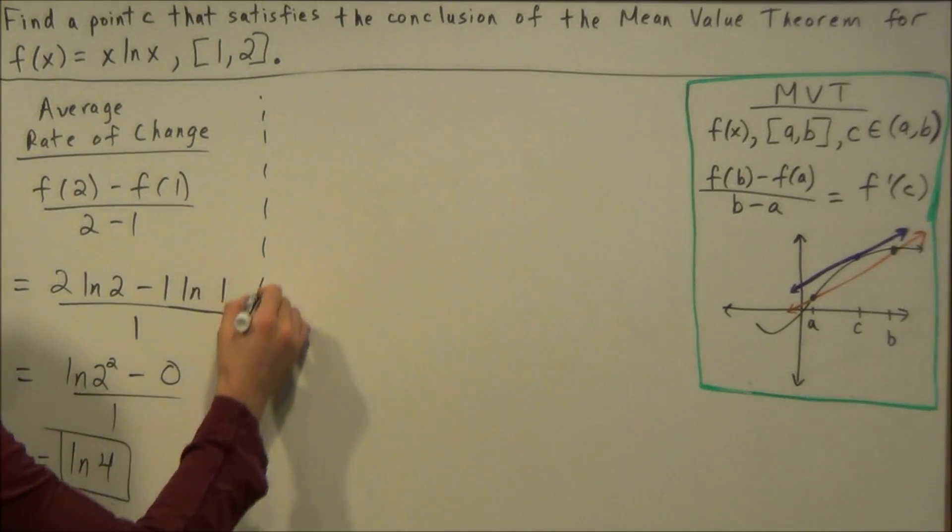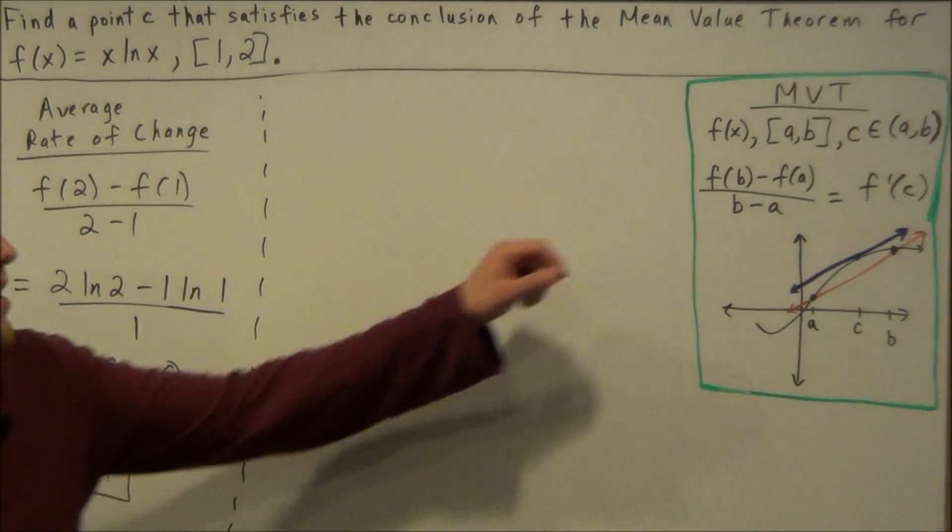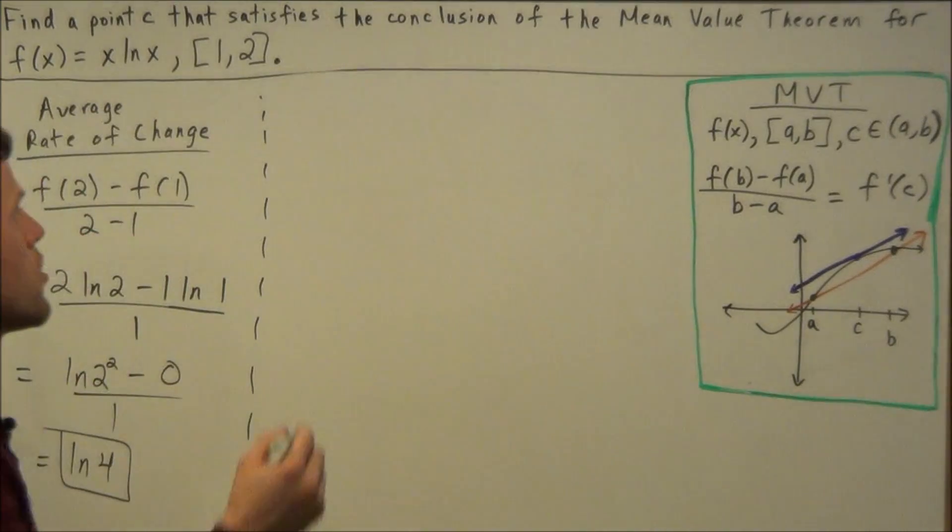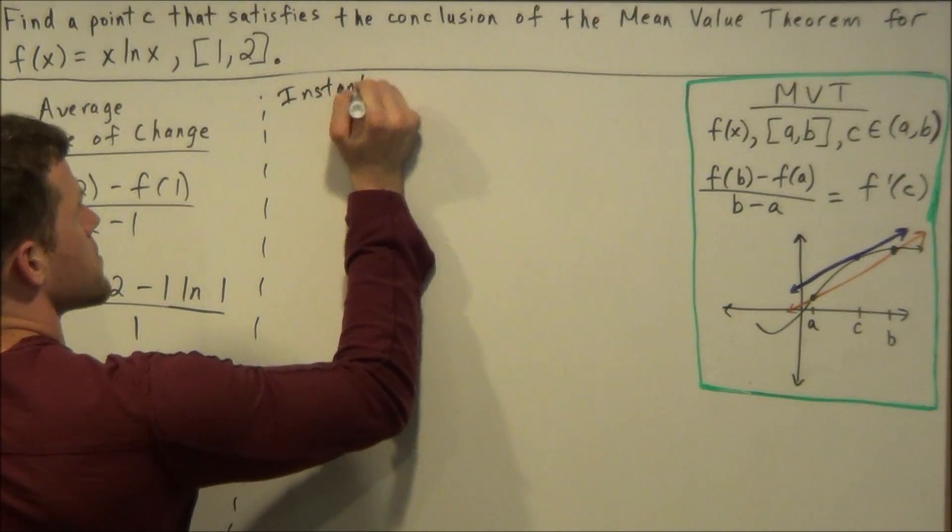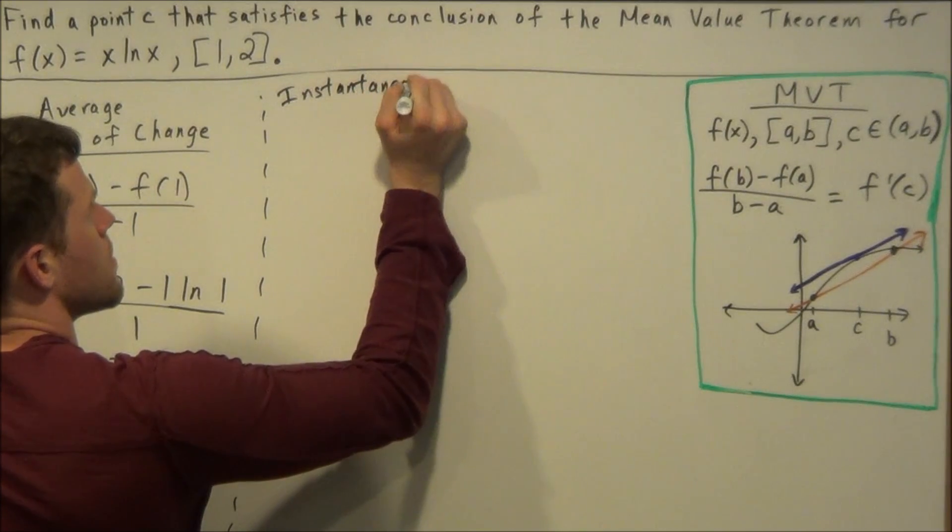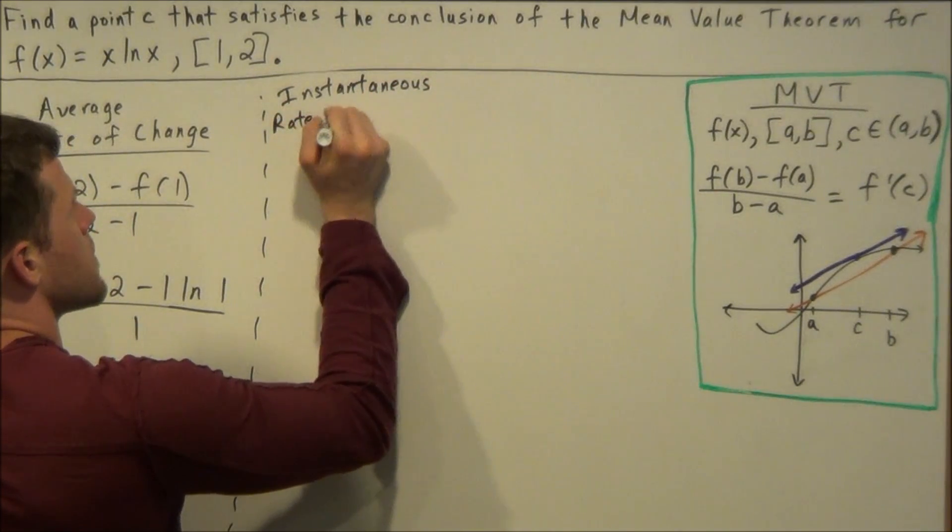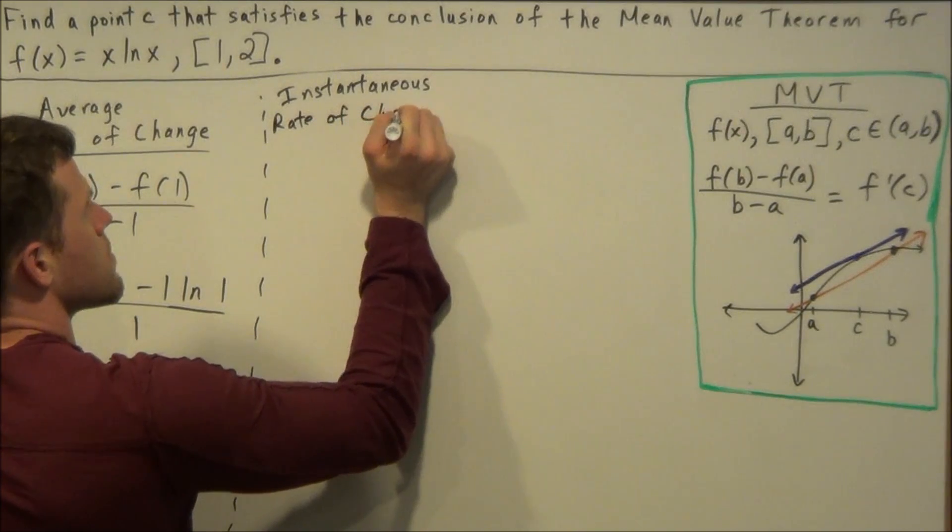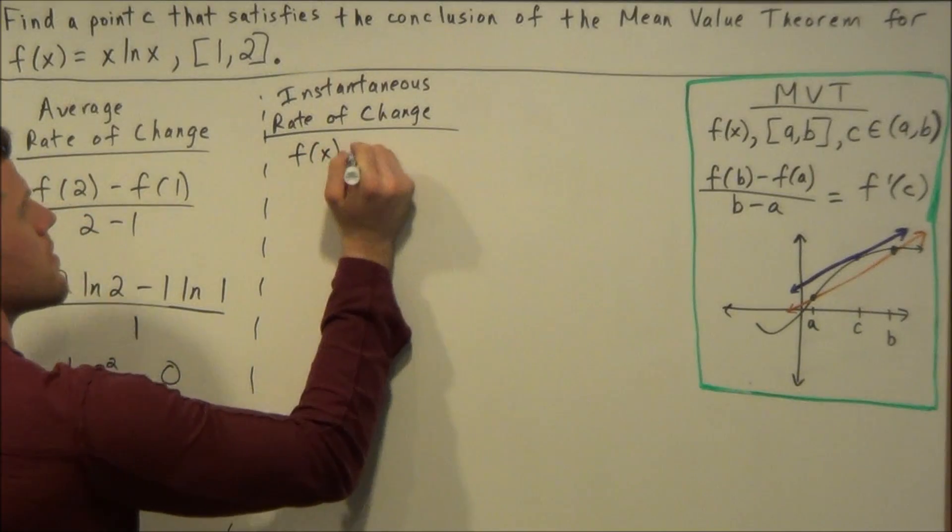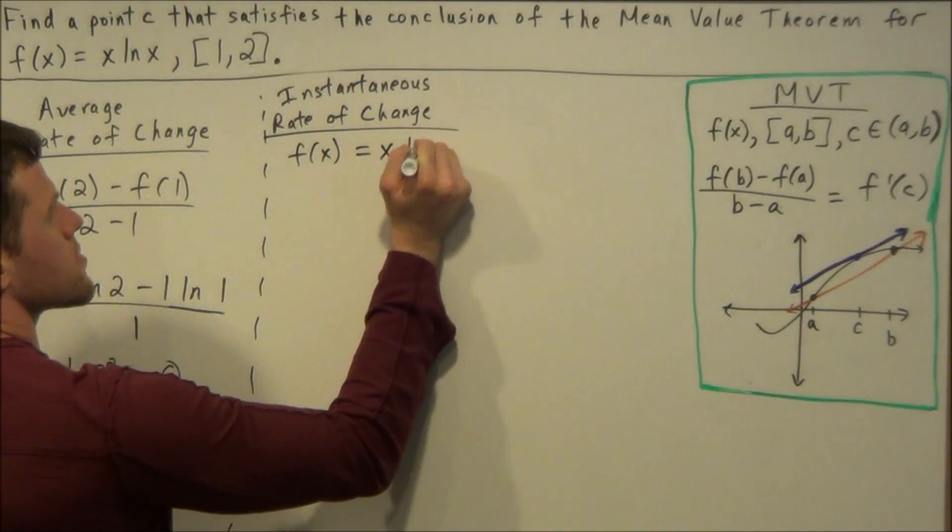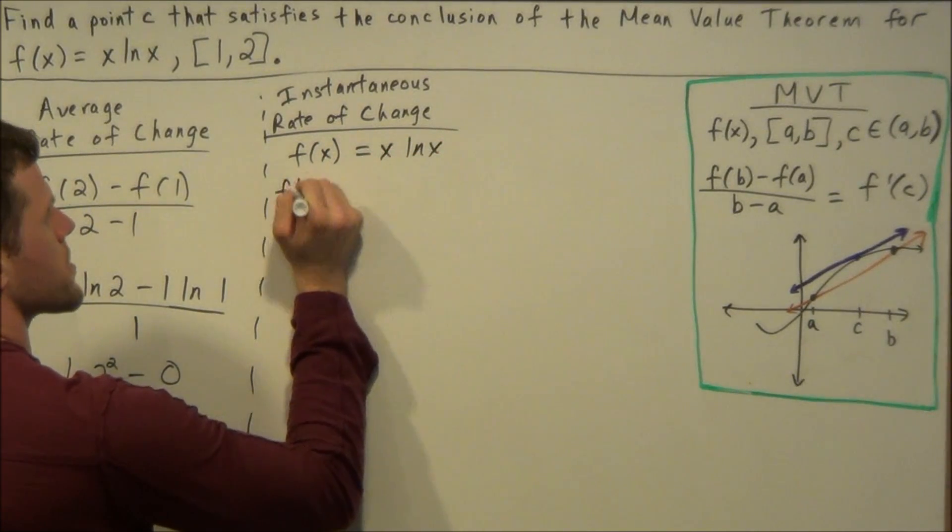The next stage of this problem is we need to find the instantaneous rate of change, which we find by calculating the derivative. So we have the instantaneous rate of change. So for this part here, we have f(x) equals x times natural log x. We're just going to calculate the first derivative.